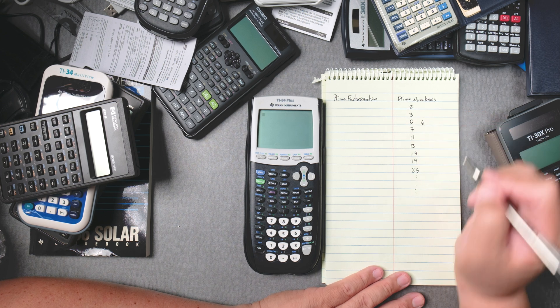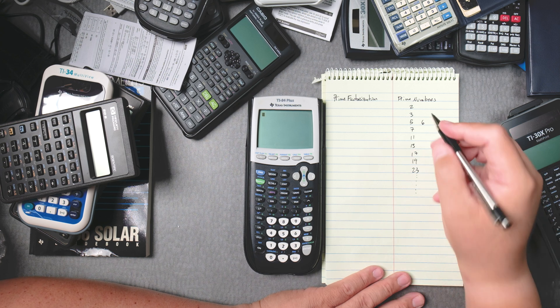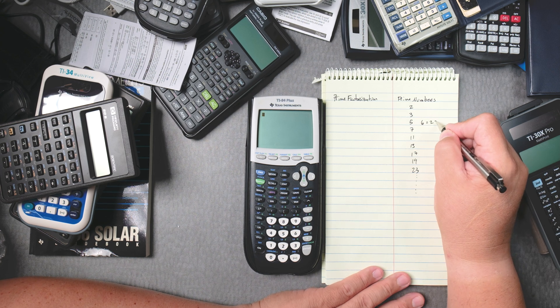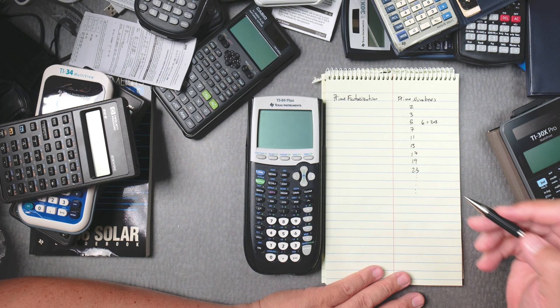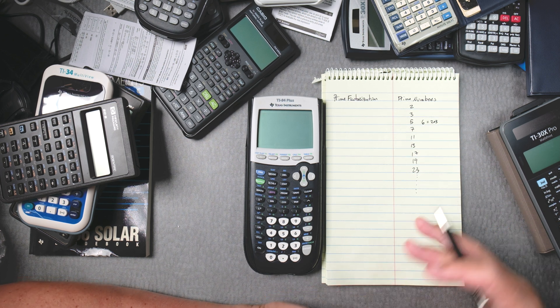If you take 6, which is called a composite number, it's composed by primes. 6 is broken down into primes, and there are no primes that are broken down into other primes. They're unique.